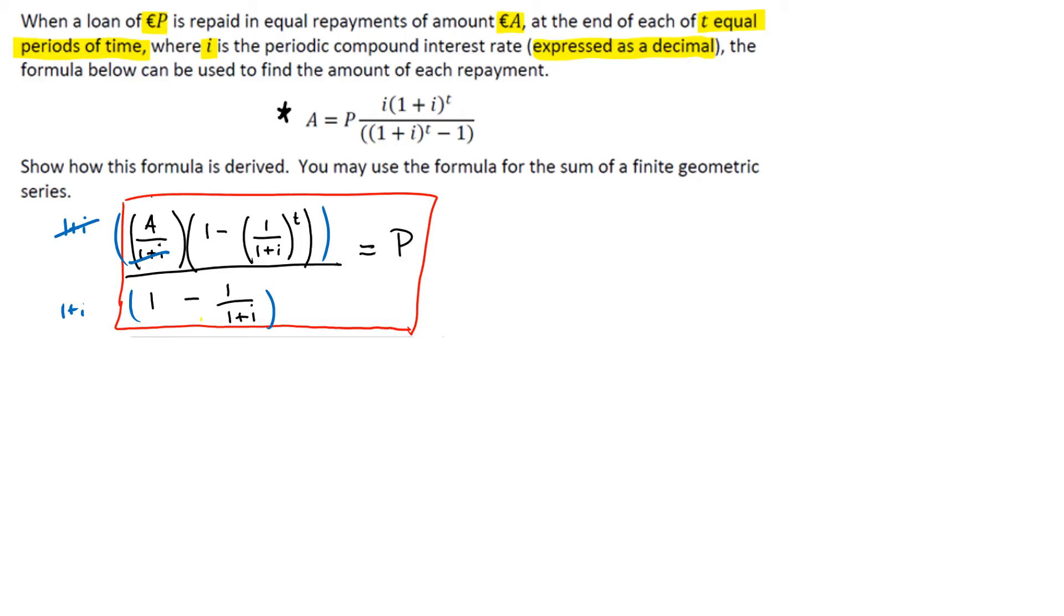And when we do that, these cancel and the bottom line will look a little bit different. So what we get on the top line is A bracket 1 minus 1 over 1 plus I to the power of T all over.